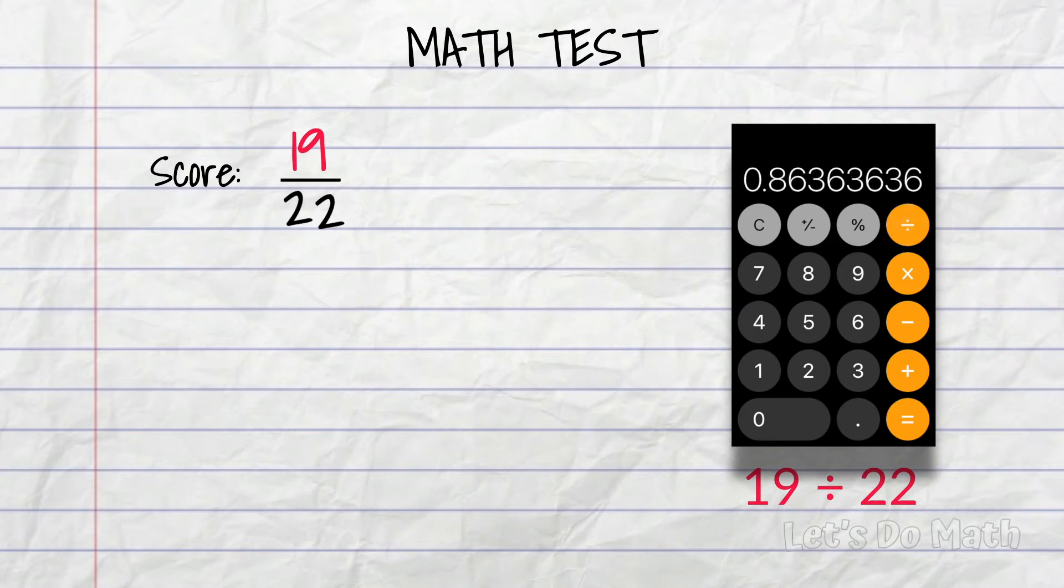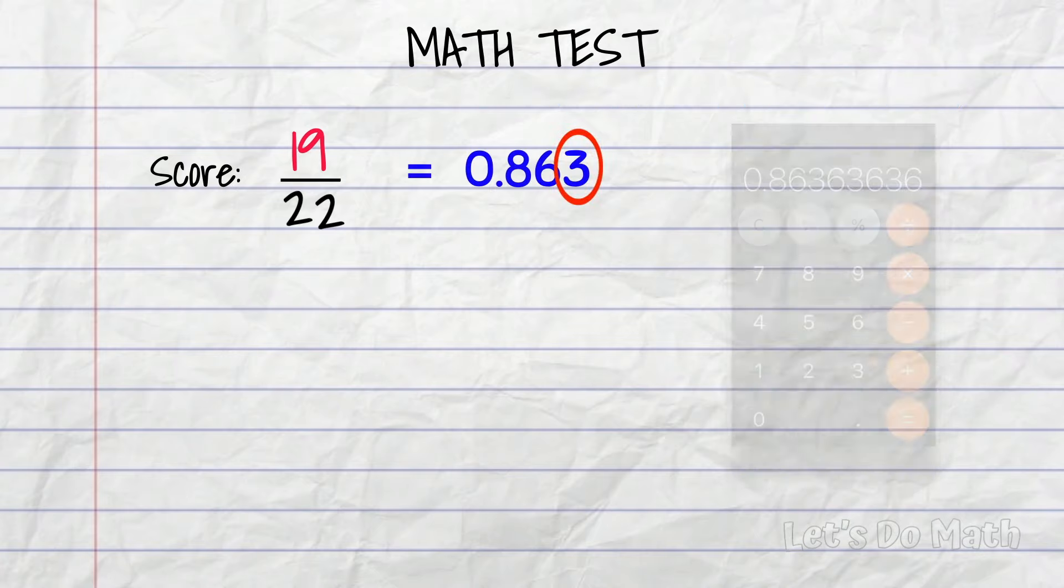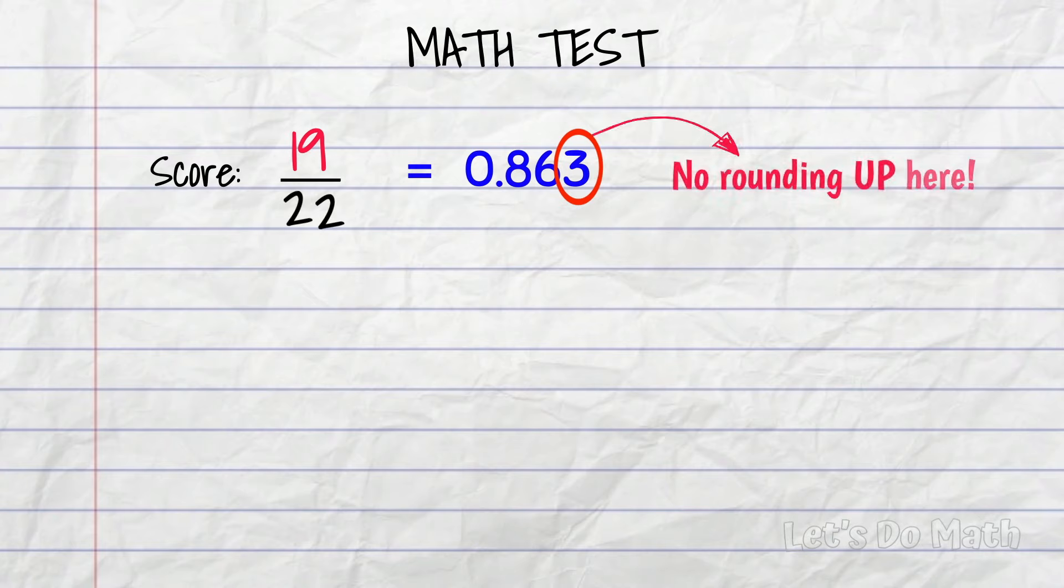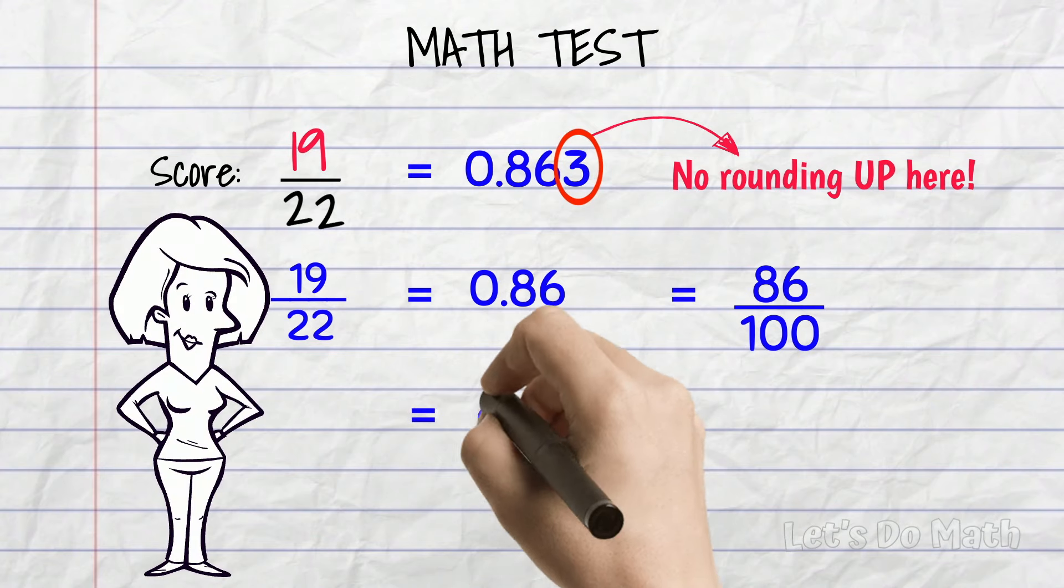0.8636 recurring. Well, we just want two decimal figures. The third figure tells us what to do! It's a 3, so no rounding up here. 19 over 22 is the same as 0.86. That means 86 hundredths, and that is equal to 86%. Nice!